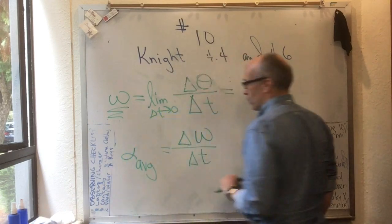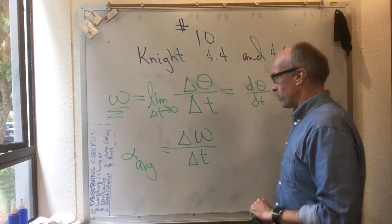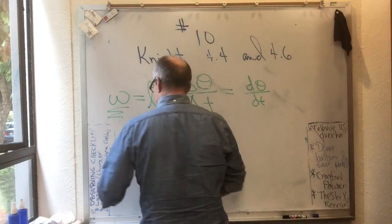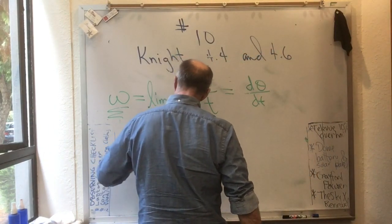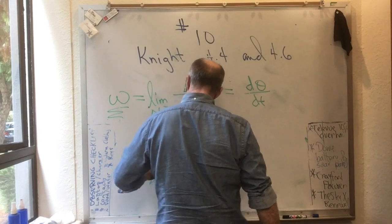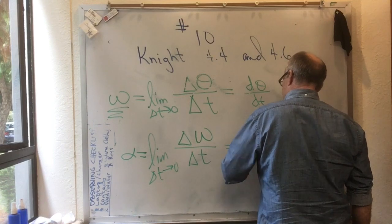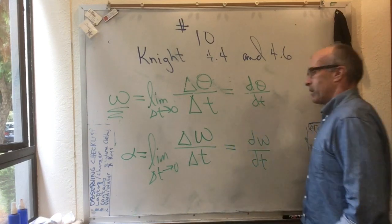And as usual, we start by defining at first its average value, and then we imagine taking the limit that delta t goes to zero. And now that gives us d omega dt.